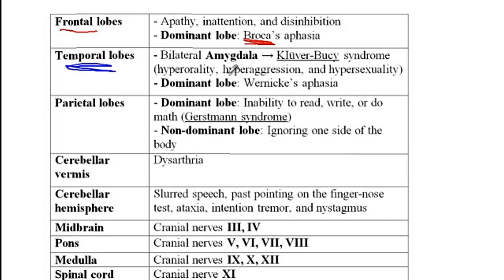With temporal lobe lesions, if it affects the bilateral amygdala, then patients present with Kluver-Bucy syndrome, where they have a tendency to examine objects by the mouth, as well as hyper-aggression and hypersexuality. If it affects the dominant lobe of the brain, they would have Wernicke aphasia, where patients will not understand words — they cannot comprehend what they hear. With Wernicke they have a problem understanding words, while with Broca it's a motor aphasia and they cannot pronounce words.